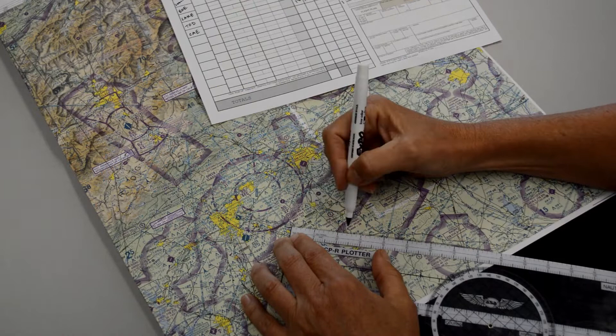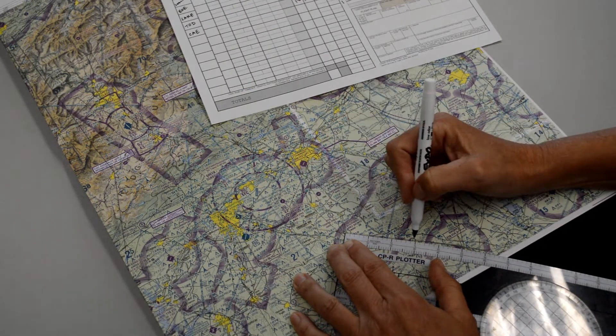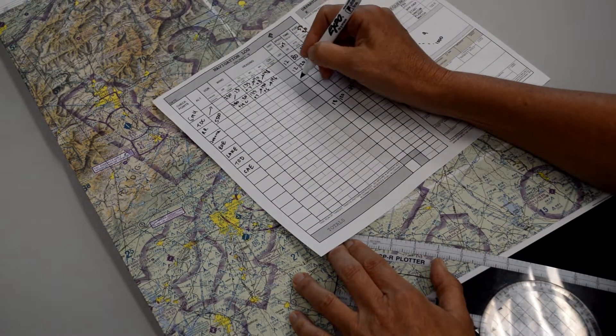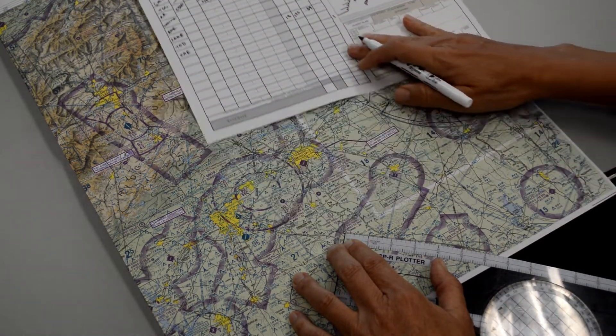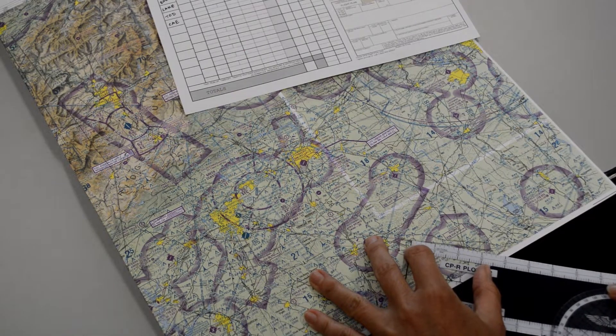To our next checkpoint, the little town of Joanna, looks like about 14 miles. To our next checkpoint, looks like about 10 miles.